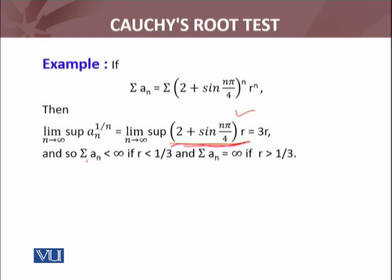Cauchy's test says that if this is less than 1, then the series is convergent. This 3r will be less than 1 whenever r is less than 1 by 3. So the series is convergent if r is less than 1 by 3.